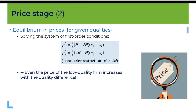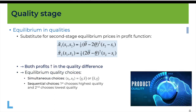This means that if the qualities chosen by the two firms are more different, then both firms — even the one with low quality, firm 1 — are able to set higher prices at equilibrium and make higher profits. We can already guess what will happen in the first stage. If increasing the difference between the two qualities increases the profits of both firms, we expect firms in the first stage to choose different qualities. Using the second-stage equilibrium prices to express the profit functions, we get profits that only depend on qualities, and both profit functions increase with the difference S_2 minus S_1.